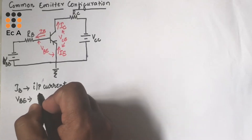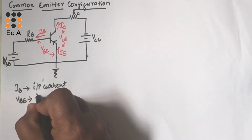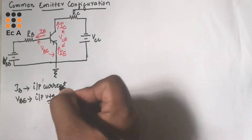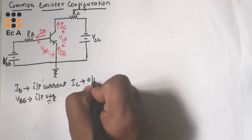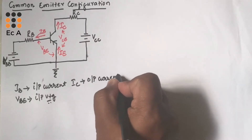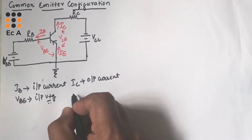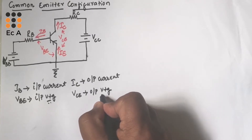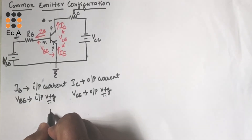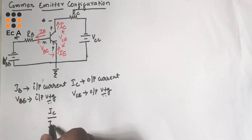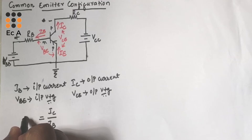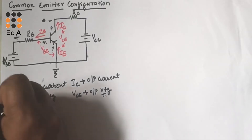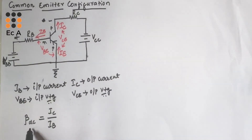VBE is the input voltage, IC is the output current, and VCE is the output voltage. The ratio of output current divided by input current gives us the current gain, represented by the term beta, or beta DC, since we are connecting DC voltage. So beta DC is the DC current gain.